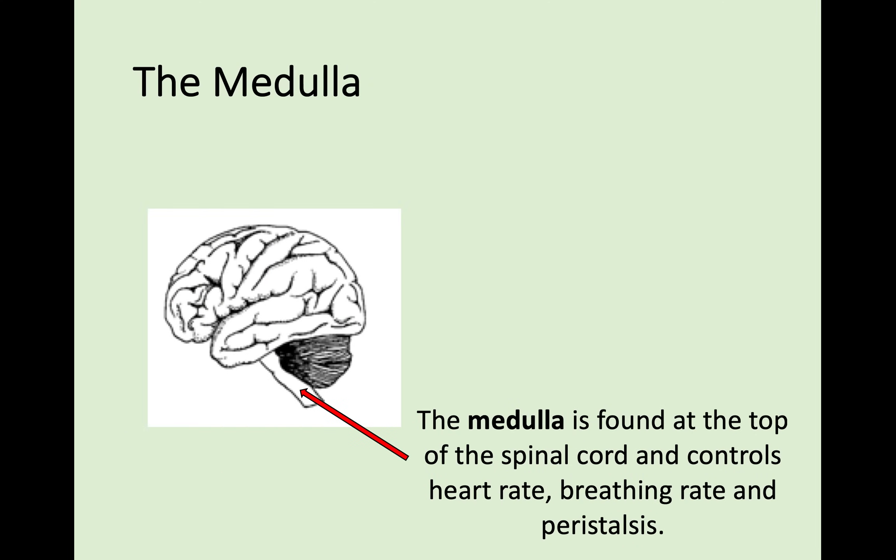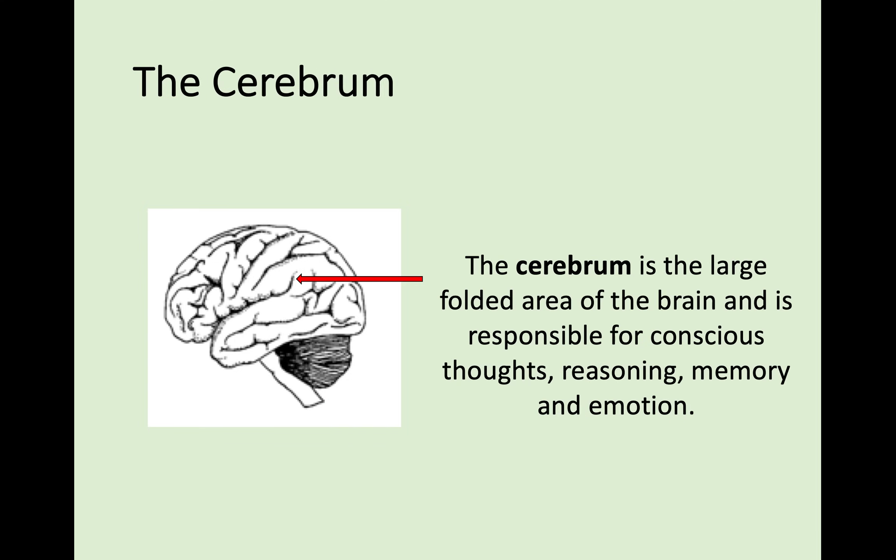If you look at this diagram, the part at the bottom of the brain is called the medulla. This is at the top of the spinal cord and it controls all your unconscious responses such as heart rate, breathing rate, and peristalsis. Things you don't actually have to consciously think about are controlled by the medulla.